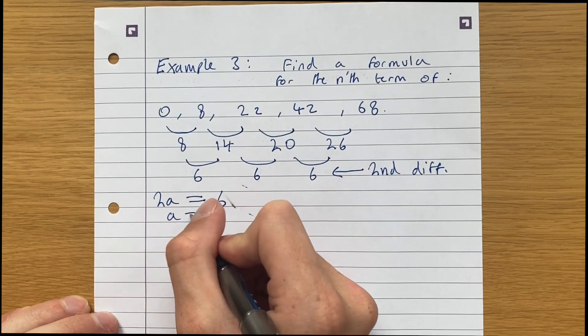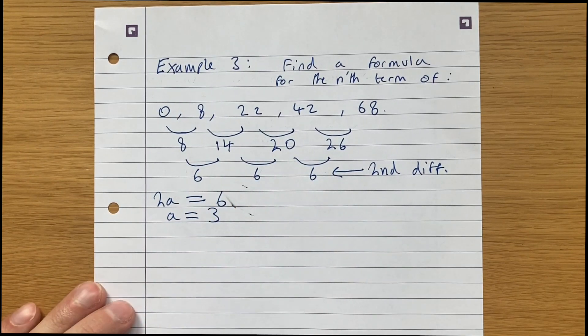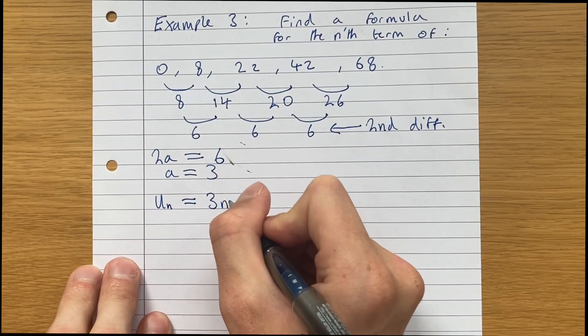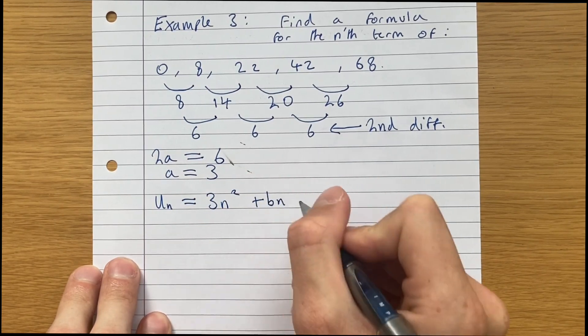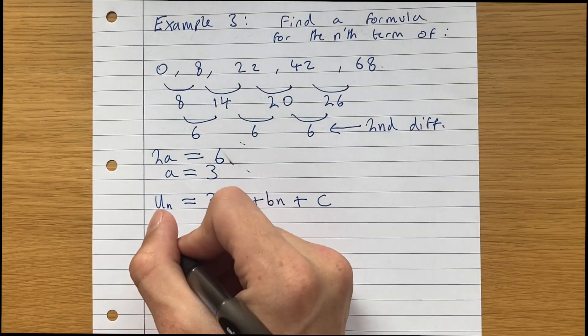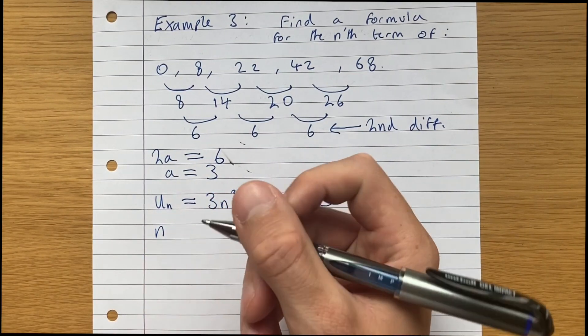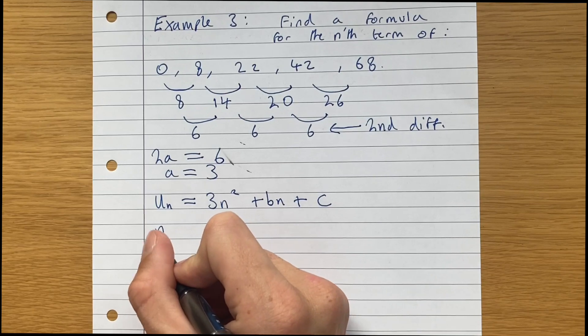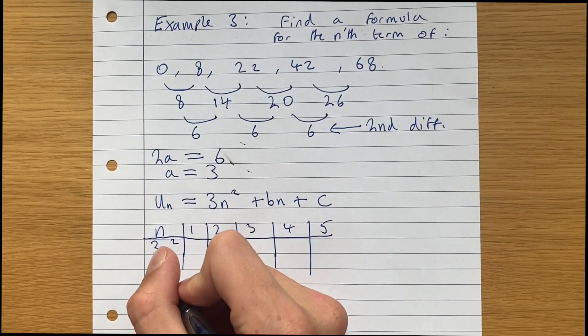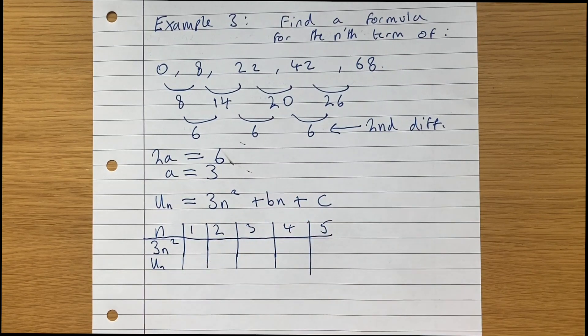Our expression for un is of the form 3n squared plus bn plus c. So if we do the same thing we did before, we write out n, we write out 3n squared, and our sequence, which we're trying to find the expression for.